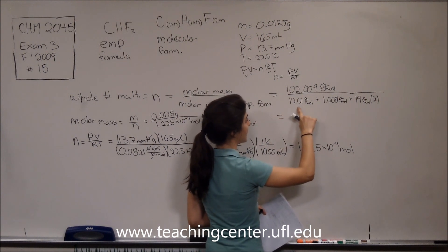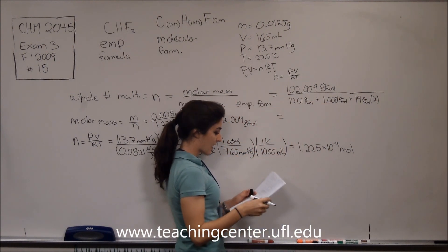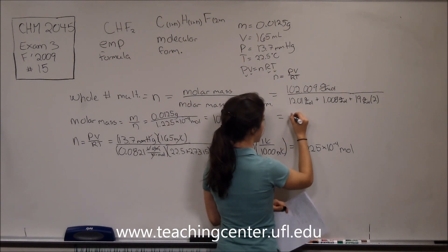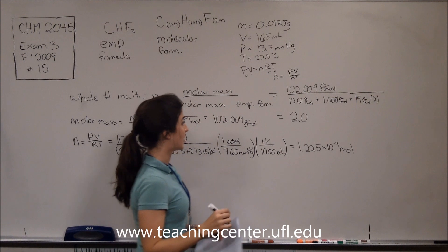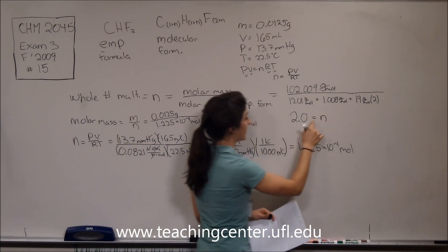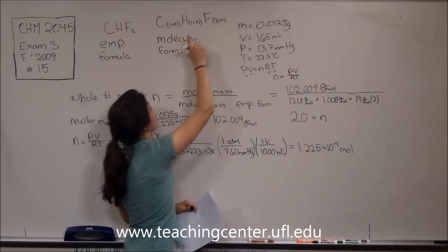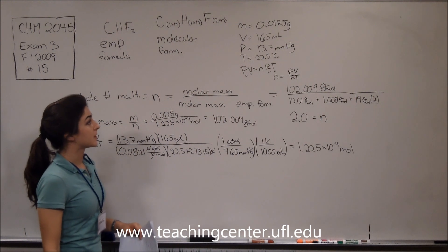And adding all of this together and dividing that into 102, we're going to get a solid number of 2.0. So our N equals 2.0.